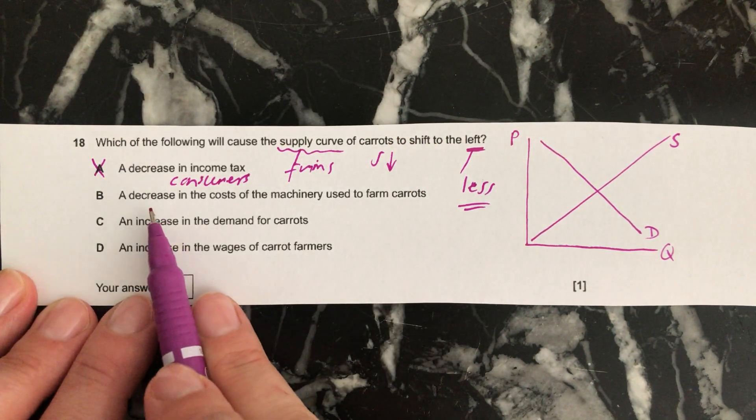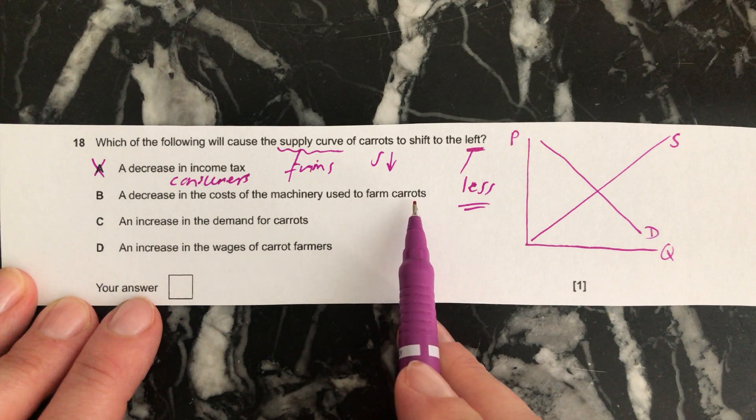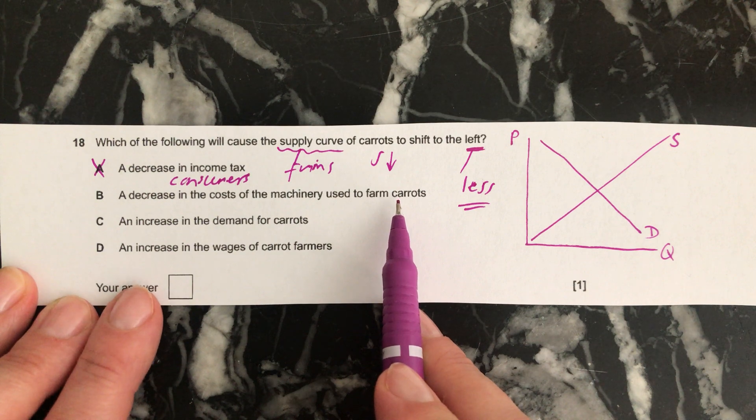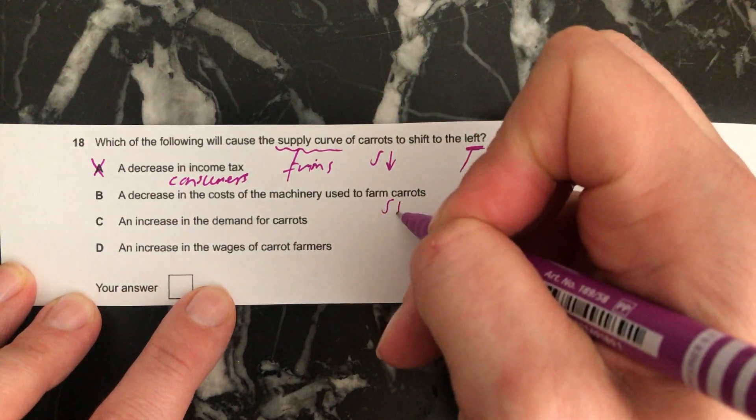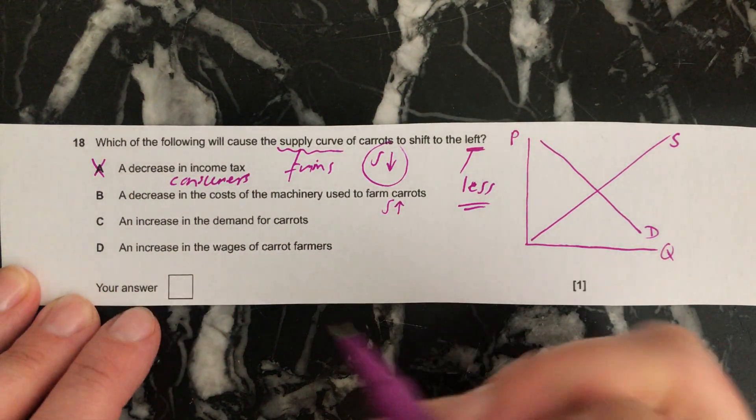The next one, a decrease in the costs of the machinery used to farm carrots. If the costs go down for people who are farming carrots, they'll be able to supply more. So this will cause supply to go up. And remember, we're looking for something that causes supply to go down. So this is wrong.